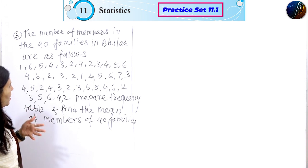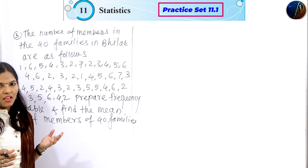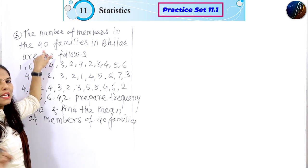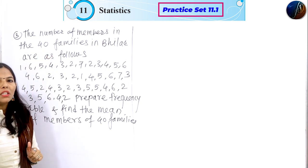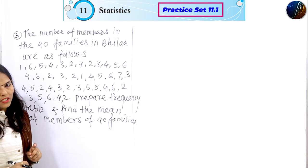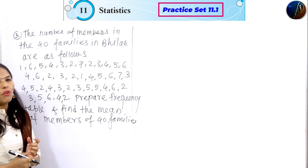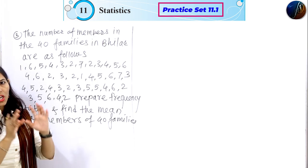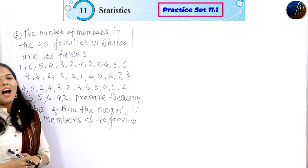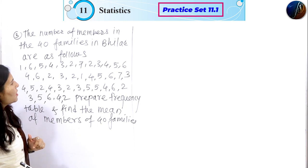For example, the number of members in the 40 families in Dilar are as follows. There are 40 families in Dilar. We will prepare the frequency table for those families and find the mean of members of 40 families. What is the mean? What is the average mean? What is the arithmetic mean? There are a lot of questions, but you can easily solve this question.